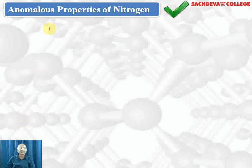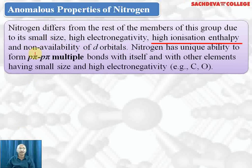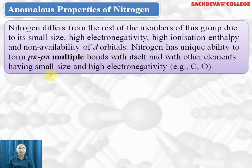Let's take up the anomalous behavior of nitrogen — why nitrogen differs from the rest of the elements. The reason is it has the smallest size, high electronegativity, high ionization enthalpy, and non-availability of d orbitals. Nitrogen has a unique ability to form pπ-pπ multiple bonds with itself and with other elements having small size and high electronegativity, like carbon and oxygen.